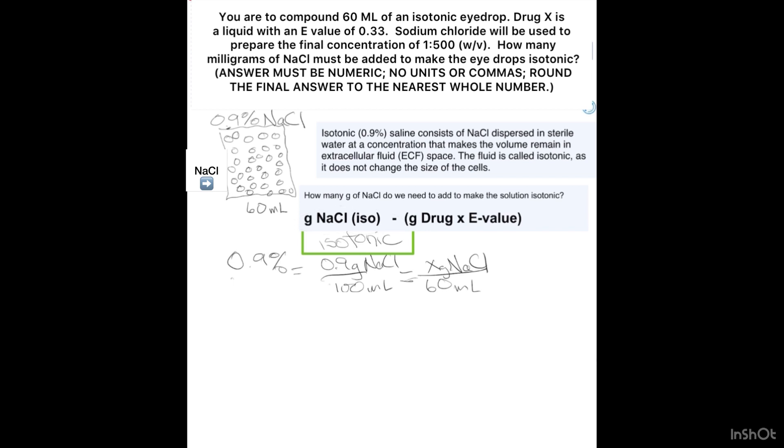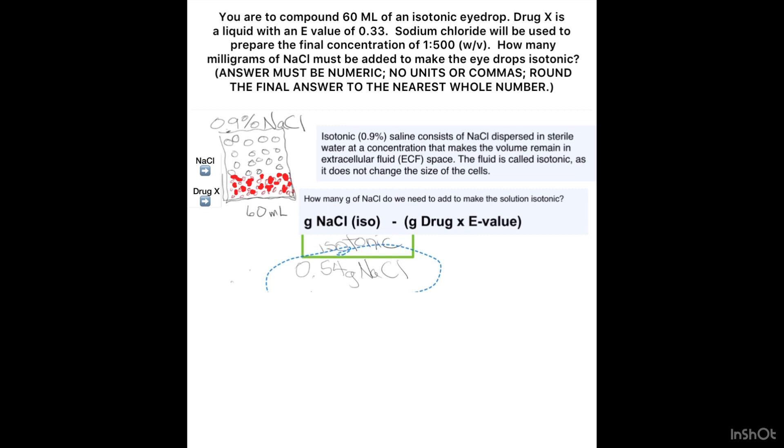Alright, so we got 0.54 grams of sodium chloride. I got the answer for that portion. I'm just going to fill out the second part where it says grams of drug times E value. So right now I'm looking simply for grams of drug.